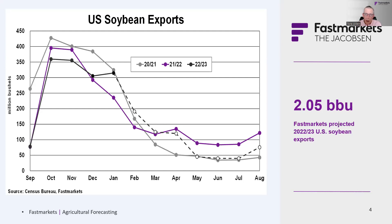It's tough to draw down ending stocks much lower than 185 million bushels. There's a concept called pipeline carryout — essentially the volume of soybeans that's difficult to access based on logistics, emptying bins, and how much of the remaining crop farmers are willing to part with. That's probably somewhere between 150 and 200 million bushels now, based on the increase we've seen in production.